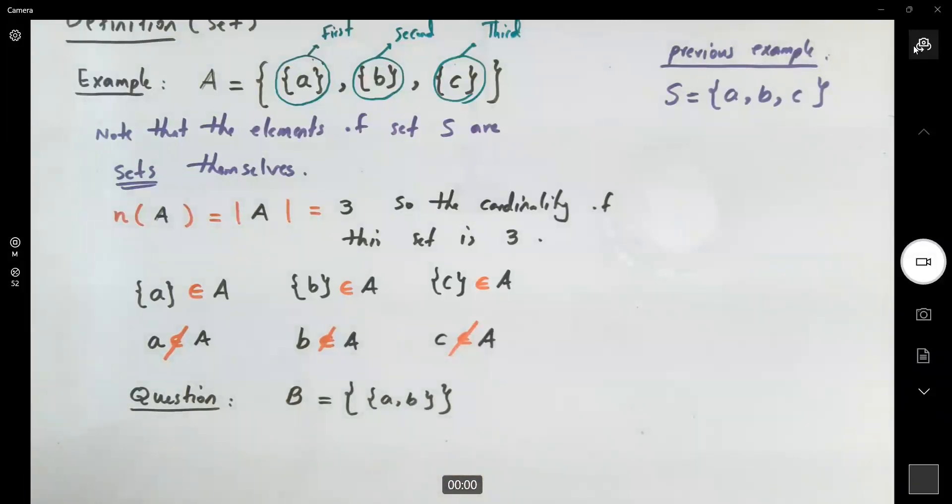As you can see, the cardinality of this set is just one. This is just one member. So n of B, or the cardinality of B, is just one. You only have one member.